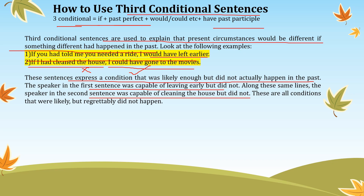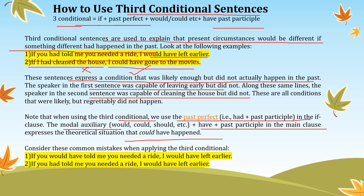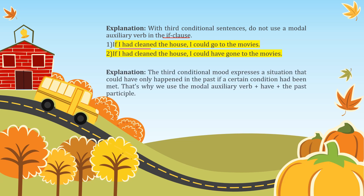When we use the third conditional, we use past perfect in the if-clause, and a modal auxiliary such as 'would,' 'could,' or 'might' plus past participle in the main clause. Do not use a modal auxiliary in the if-clause — that is a common mistake. The third conditional expresses a situation that could have only happened in the past if a certain condition had been met.